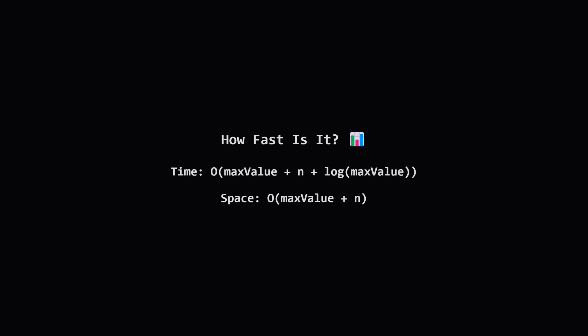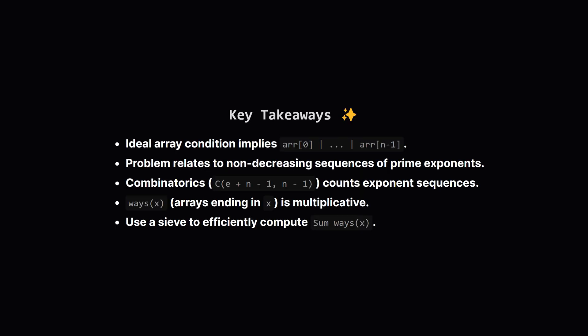So how efficient is this approach? The pre-computation for combinations takes time roughly proportional to n + log(maxValue). The sieve for SPF takes time roughly proportional to maxValue. The main loop to calculate the ways array also runs up to maxValue. The final summation is also proportional to maxValue. Putting it together, the dominant factor is maxValue. So the time complexity is roughly O(maxValue + n). Much, much better than the exponential brute force. For space, we store the SPF array, the ways array, and helper arrays up to maxValue, plus the factorial arrays up to n + maxValue. So the space complexity is also roughly O(maxValue + n).